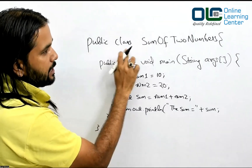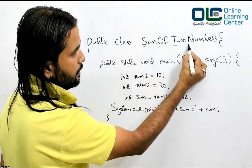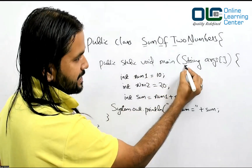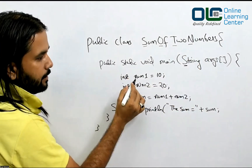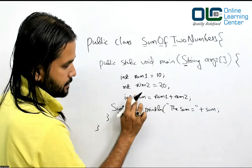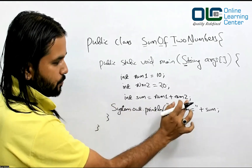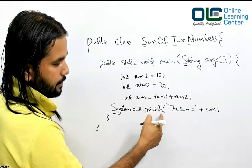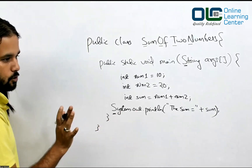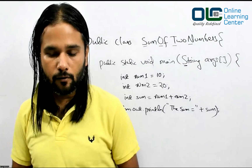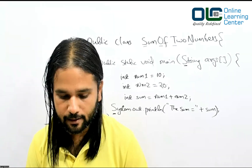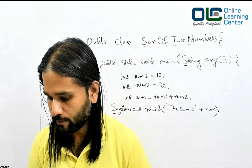Now let's understand what letters are capitalized. 'public' is all lowercase, 'class' is all lowercase. SumOfTwoNumbers: S capital, O capital, T capital, N capital. In the main method: public static void main all lowercase, String — S capital — args all lowercase. int, num1, num2, sum are all lowercase. System — S capital — and everything else is small. Be careful not to get confused.